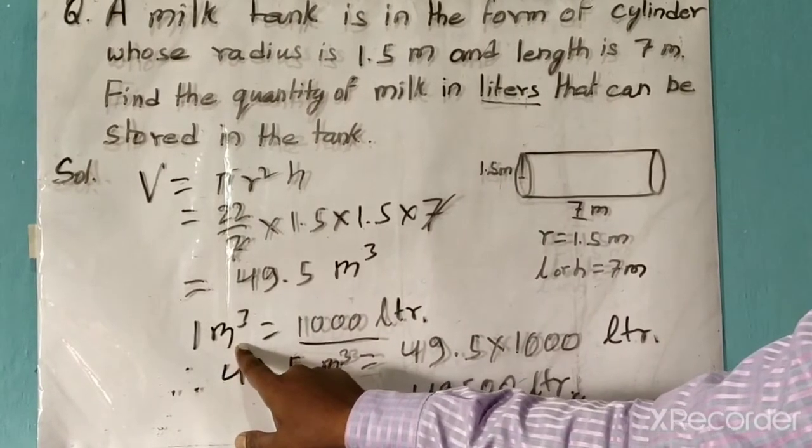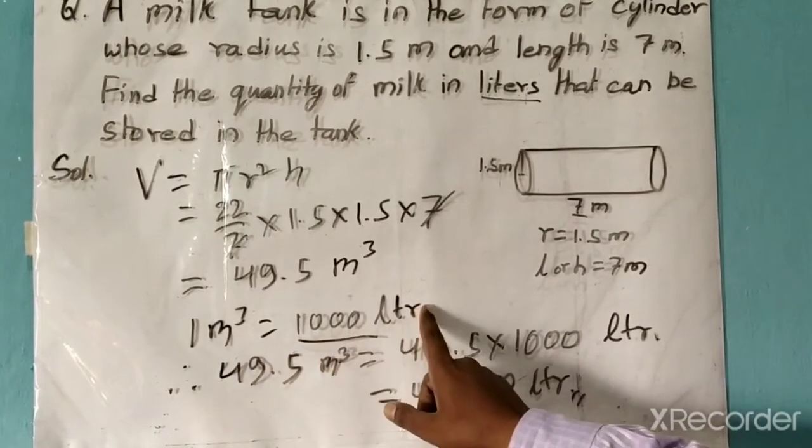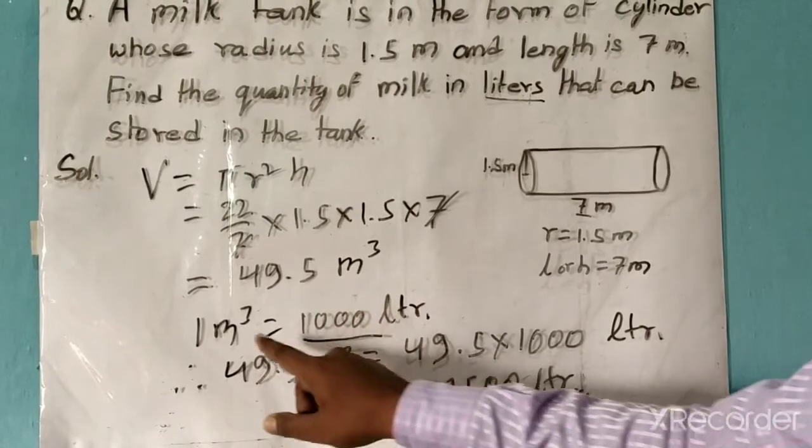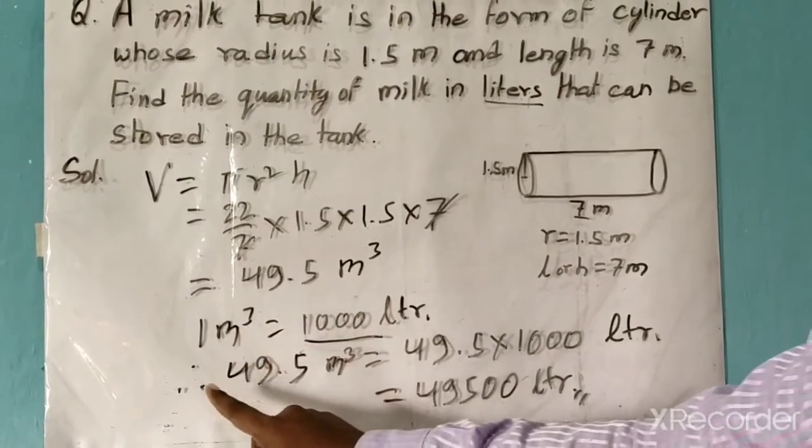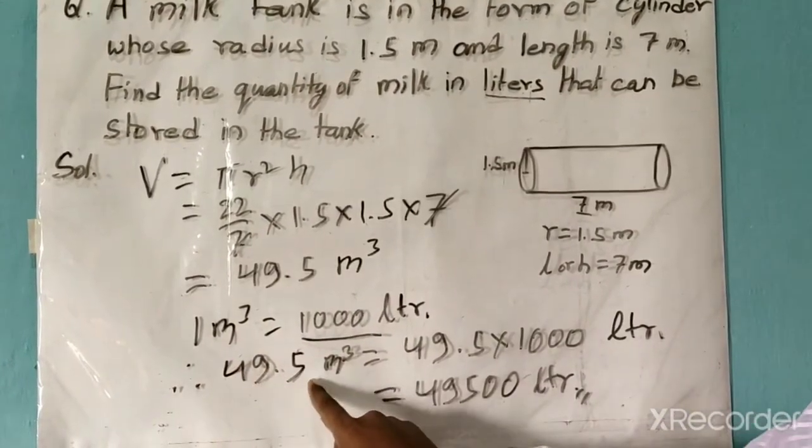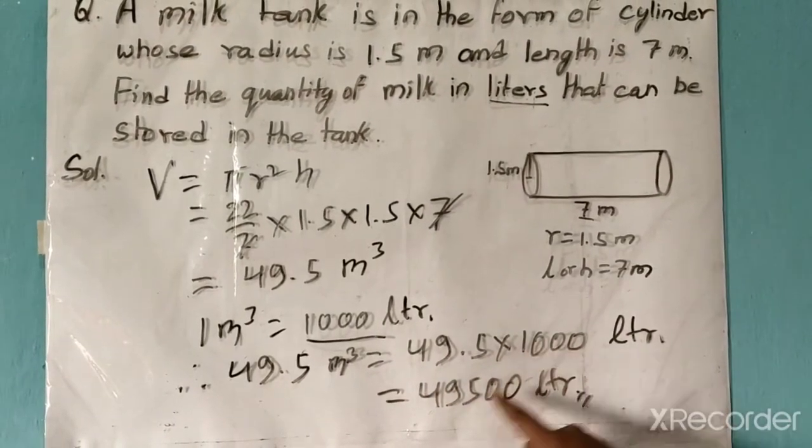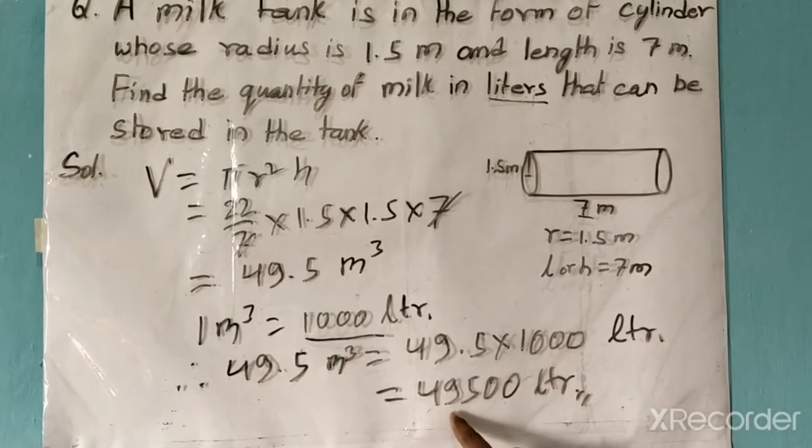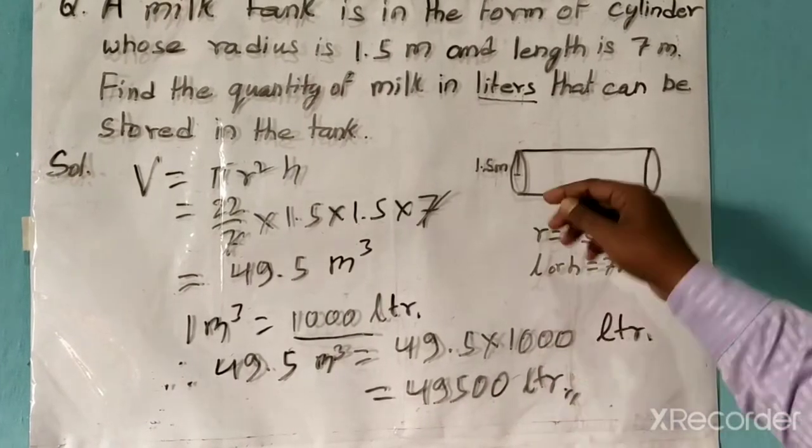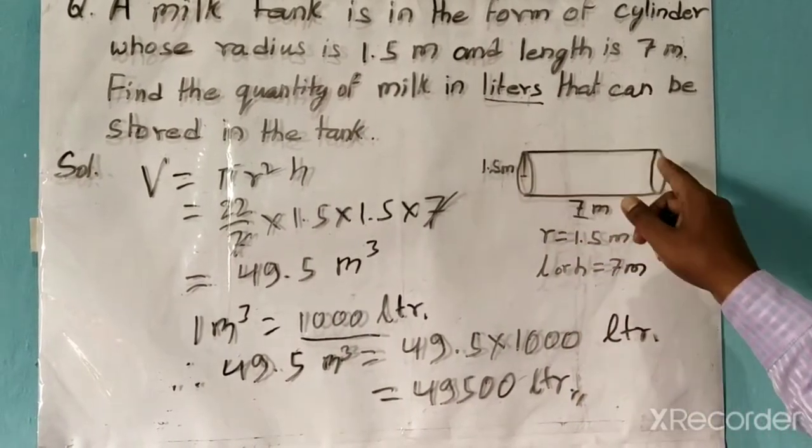On applying this value we got 49.5 cubic meters. Now we have to convert this into liters. So 1 cubic meter equals 1000 liters. This is the capacity of 1 cubic meter. Therefore 49.5 cubic meters will equal 49.5 times 1000, so the answer will be 49,500 liters. So this is the capacity for this cylinder.